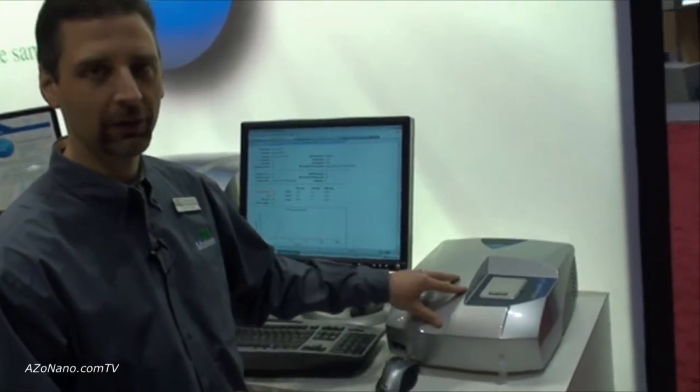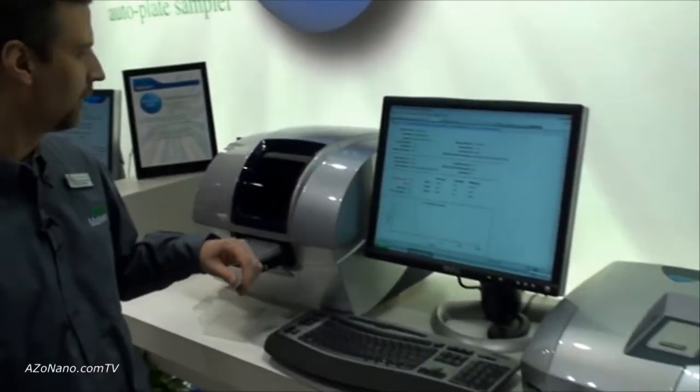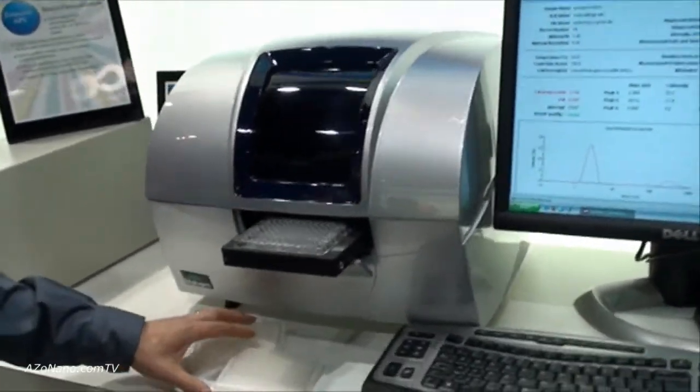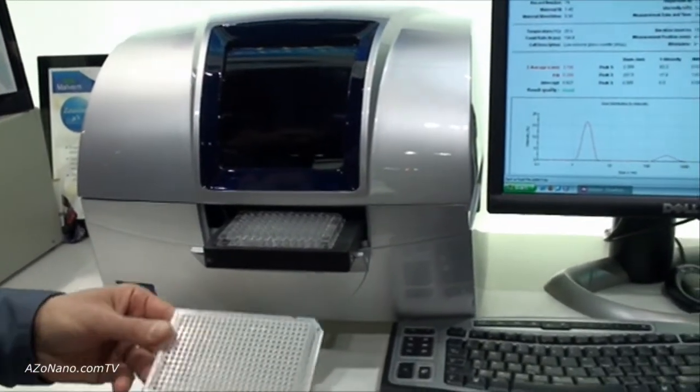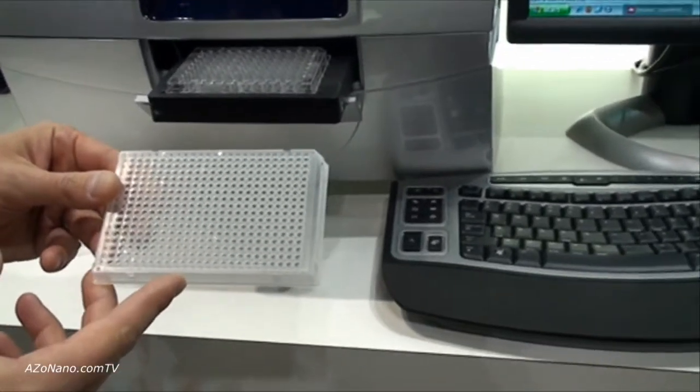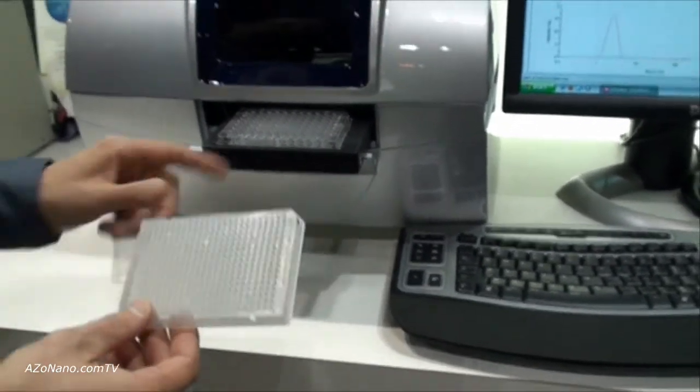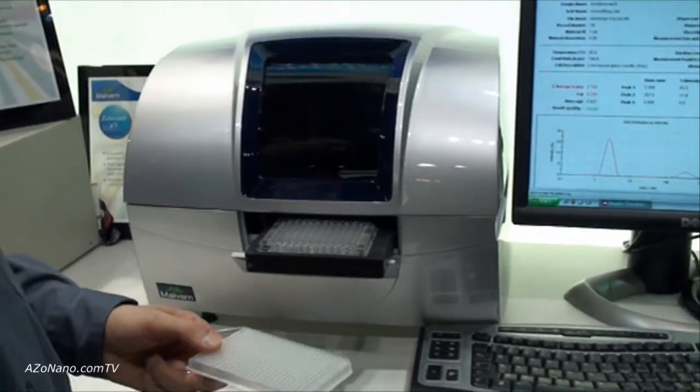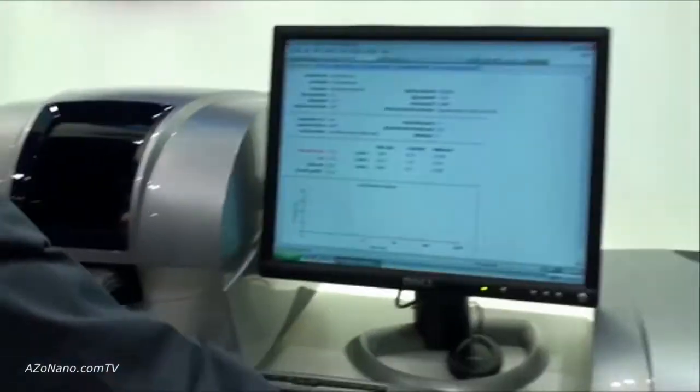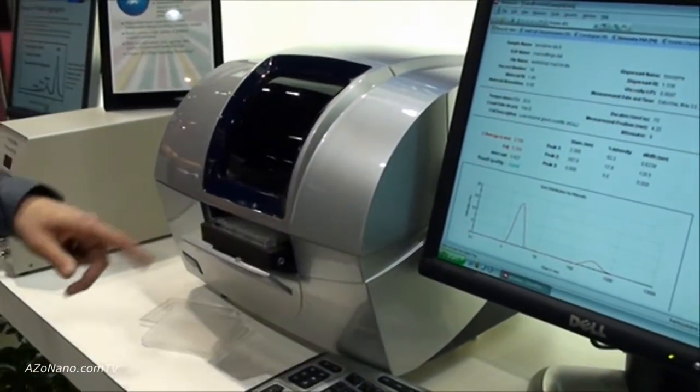Related to the Zetasizer Micro V is our other new instrument, the Zetasizer APS, which stands for Auto Plate Sampler. This will use virtually any industry standard 384-well or 96-well plate. The samples are prepared into the plates, and we simply place that plate into the instrument.